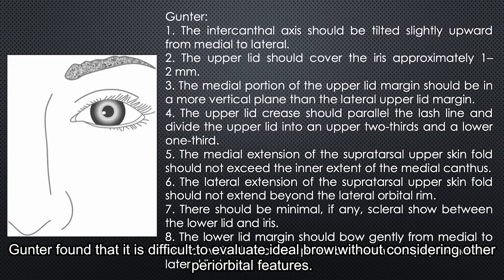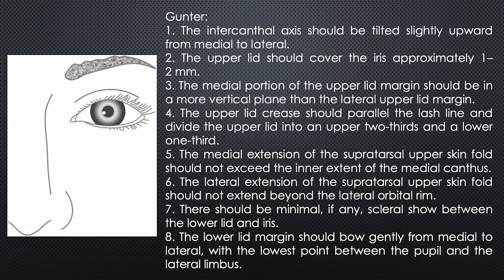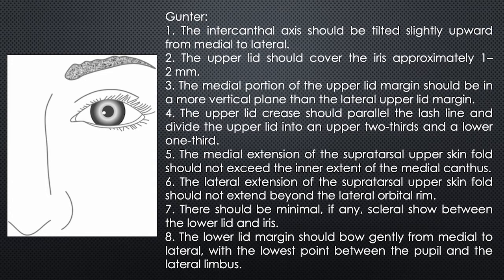Gunter found that it is difficult to evaluate the ideal frame without considering other periorbital features. They formulated the following criteria for attractive eyes: the intercanthal area should be tilted slightly upward from medial to lateral; the upper lid should cover the iris approximately 1 to 2 mm; the medial portions of the upper lid margin should be in a more vertical plane than the lateral upper lid margins; the upper lid crease should parallel the lash line and divide the upper lid into an upper two-thirds and a lower one-third; the medial extension of the supratarsal upper lid skin fold should not extend beyond the inner canthus; and the lateral extension should not extend beyond the lateral orbital brim.